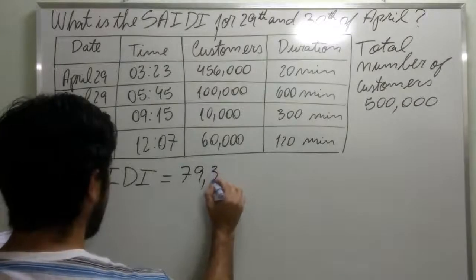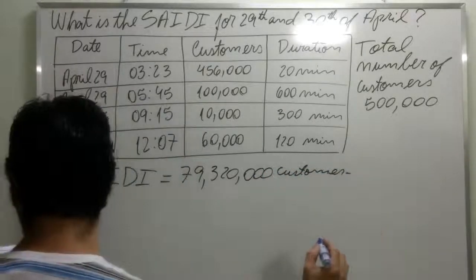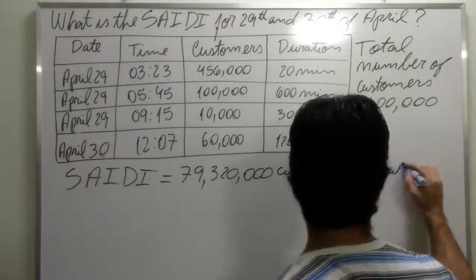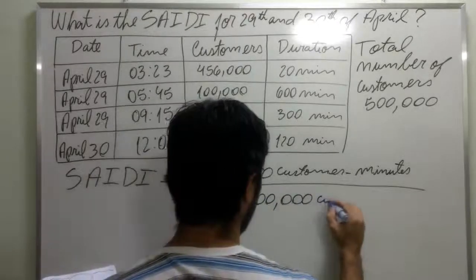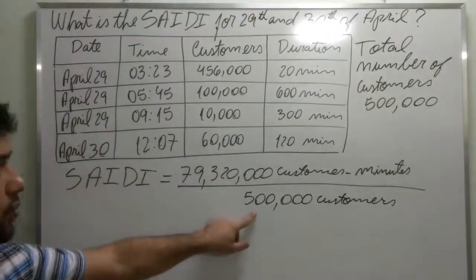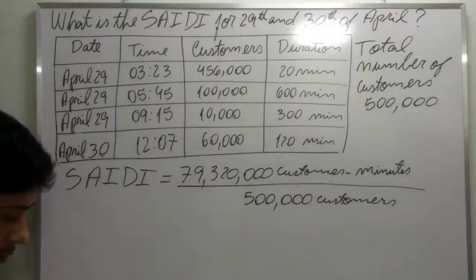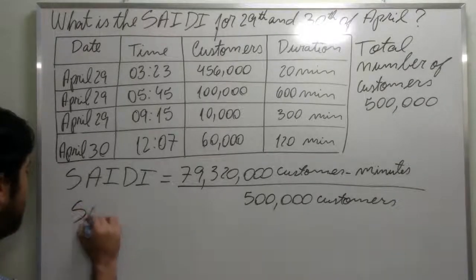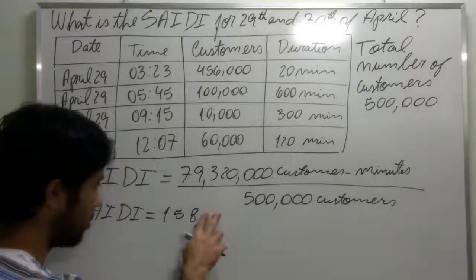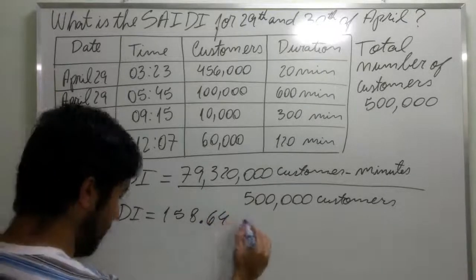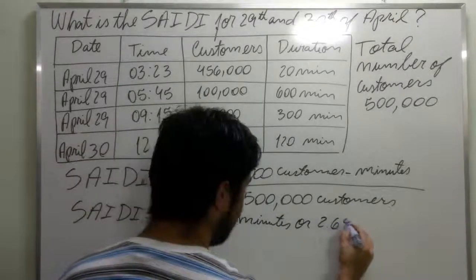I already did the calculation and found a total of 79,320,000 customer minutes, divided by 500,000. After doing this math, we find that our SATI will be 158.64 minutes, or 2.64 hours.